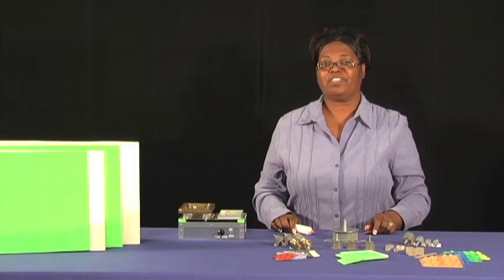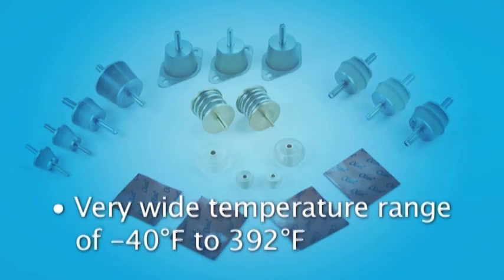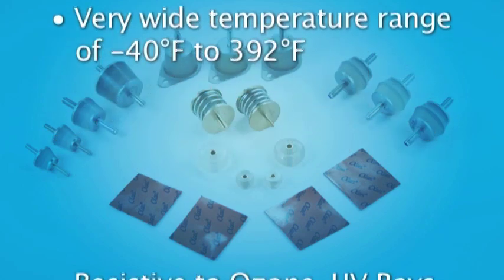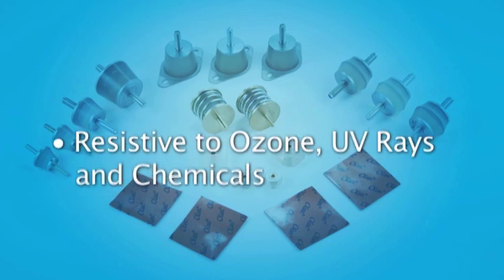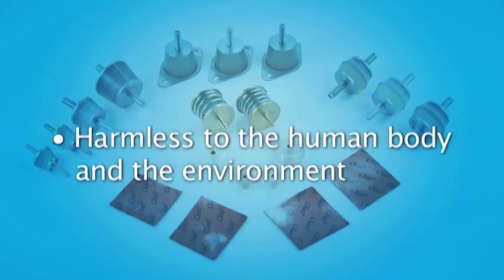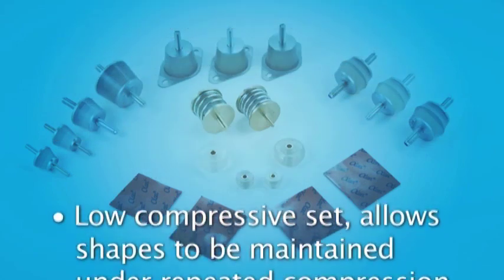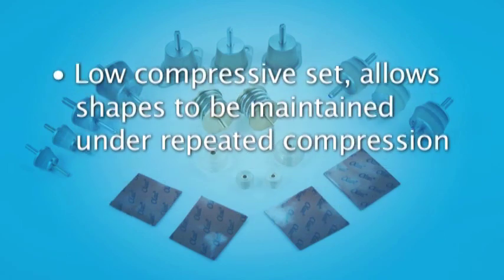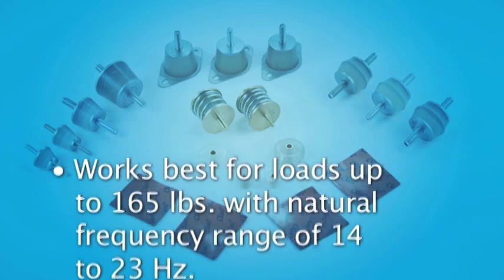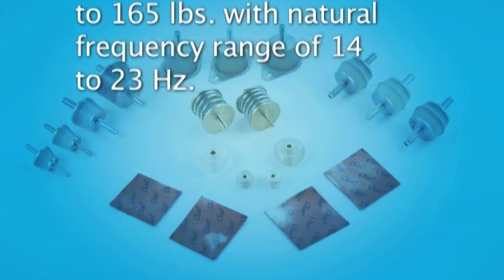There are many outstanding benefits for using silicone gel based products in your applications. Silicone gel has a very wide temperature range from minus 40 to 392 degrees Fahrenheit. It is resistive to ozone, UV rays, and chemicals. Silicone gel is harmless to the human body and the environment. With excellent rebound resiliency, its low compressive set allows shapes to be maintained under repeated compression. It works best for loads up to 165 pounds with natural frequencies ranging from 14 to 23 hertz.